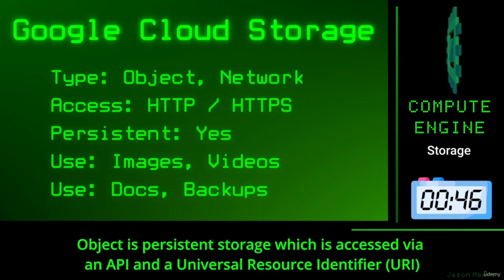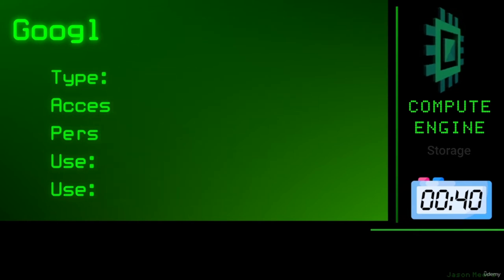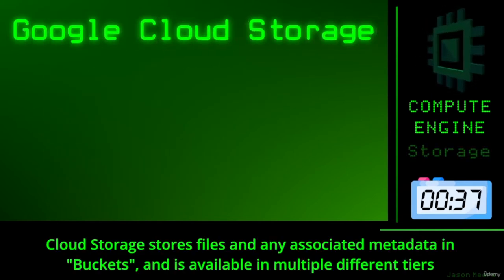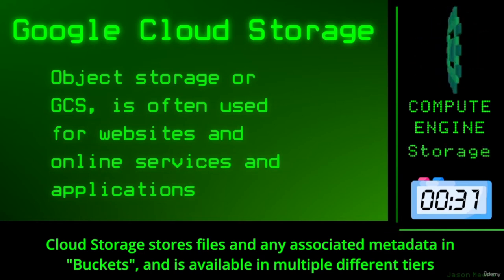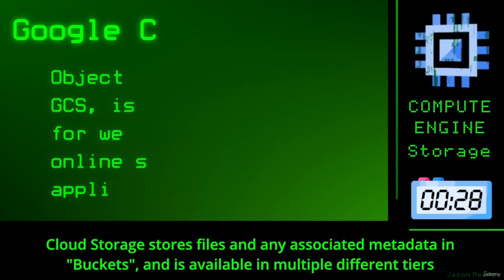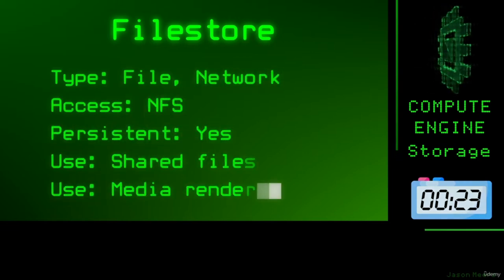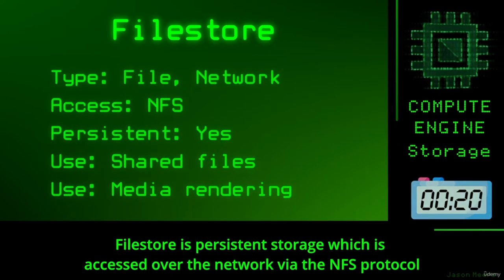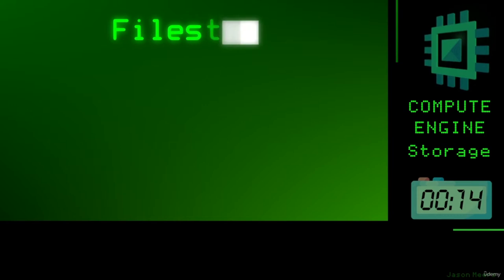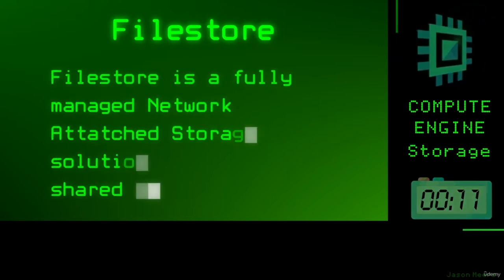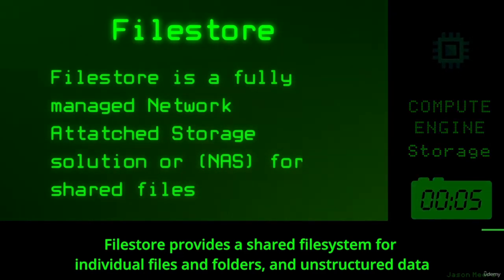Object storage is persistent storage which is accessed via an API and a universal resource identifier. Cloud Storage stores files and any associated metadata in buckets and is available in multiple different tiers. FileStore is persistent storage which is accessed over the network via the NFS protocol and provides a shared file system for individual files and folders and unstructured data.